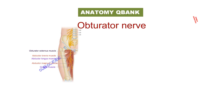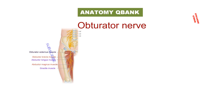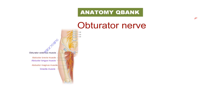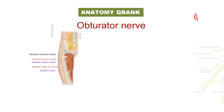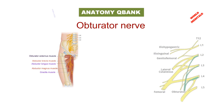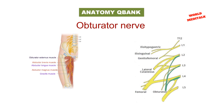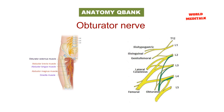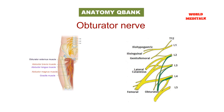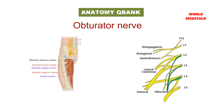It then crosses the sacroiliac joint to enter the lesser pelvis, descending on the obturator internus to enter the obturator groove. In the lesser pelvis, the nerve lies lateral to the internal iliac vessel and ureter, and is joined by the obturator vessels lateral to the ovary or ductus deferens.